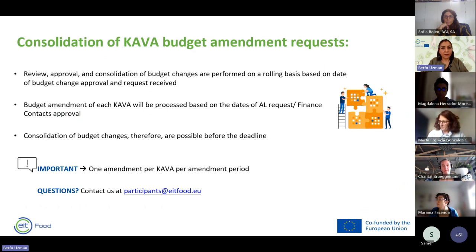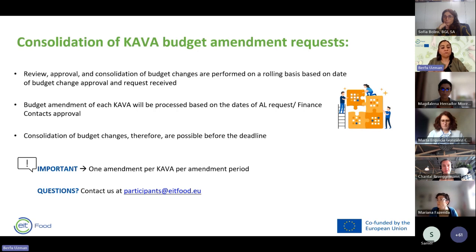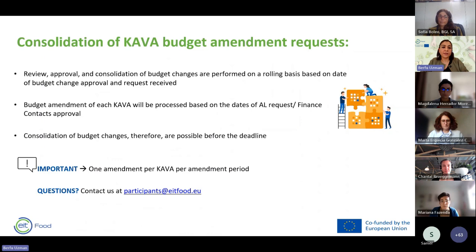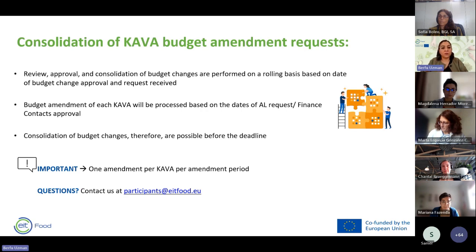Consolidation of the KAVA budget amendment requires review, approval, and consolidation, and these are performed on a rolling basis — you do not need to wait for the deadline and can continuously submit changes. The budget amendment of each KAVA will be processed based on the dates of the Activity Leader's submission and finance contacts' approval. There will be one amendment per KAVA per amendment period, so once consolidated, it is done.